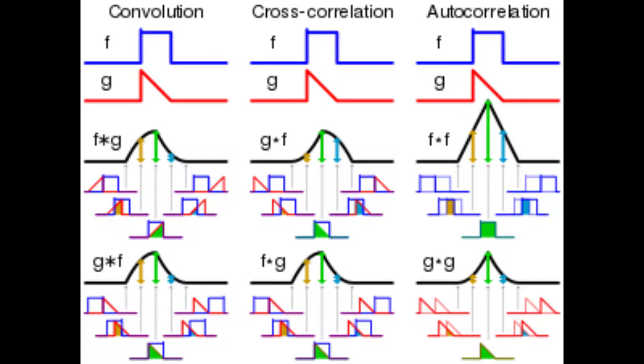Shown here are different types of convolutions. Convolutions are the integral of the pointwise multiplication of two functions as a function of the amount that one of the original functions is translated. If you perform a convolution of a function on itself, that is called autocorrelation.